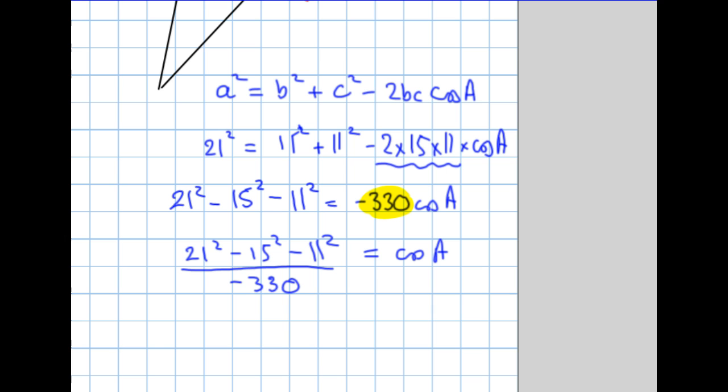And yet we're trying to find A. So A is going to be equal to, I'll write this down, cosine to the minus 1 of that expression there. 21 squared take away 15 squared take away 11 squared all over minus 330. Let's get the calculator to do all of that.